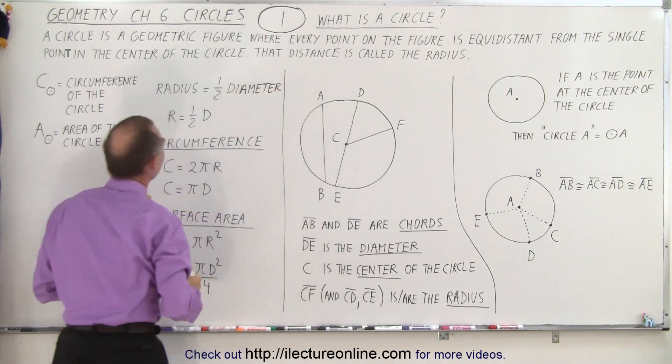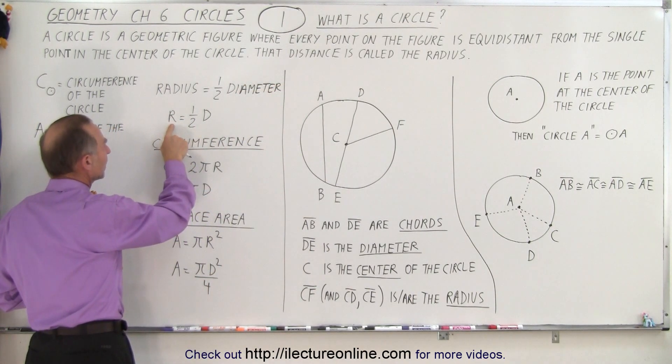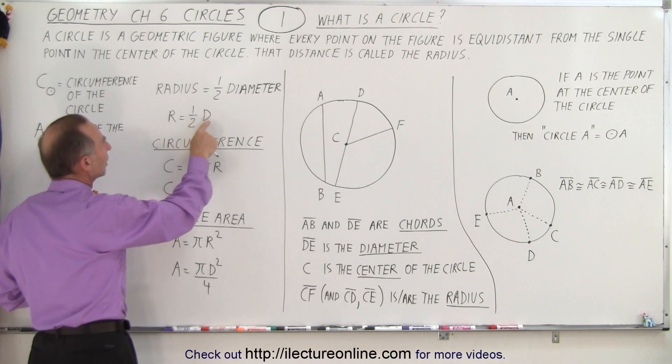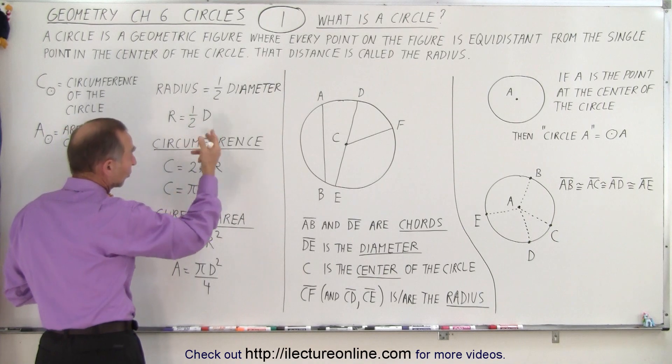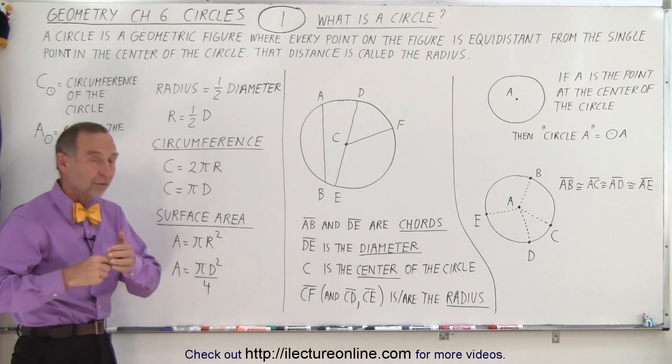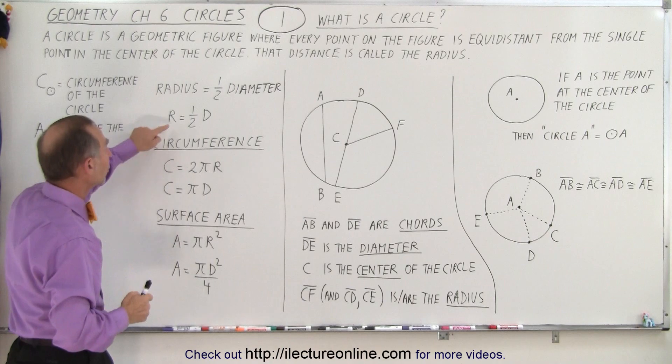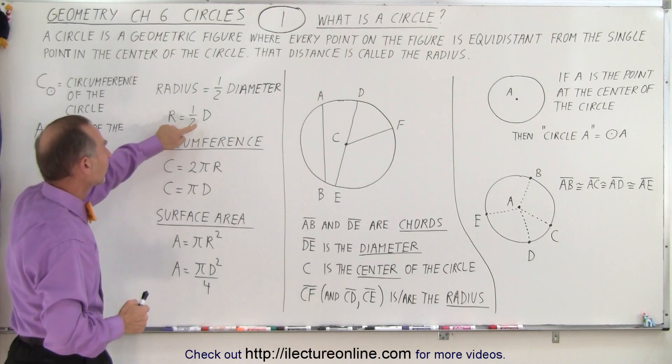There we go. And we can write it like this. Capital R can be indicative of the radius. Capital D can be indicative of the diameter. Sometimes we also use a small d, depending upon what text we use. And so we can see that the radius is always exactly equal to half the diameter.